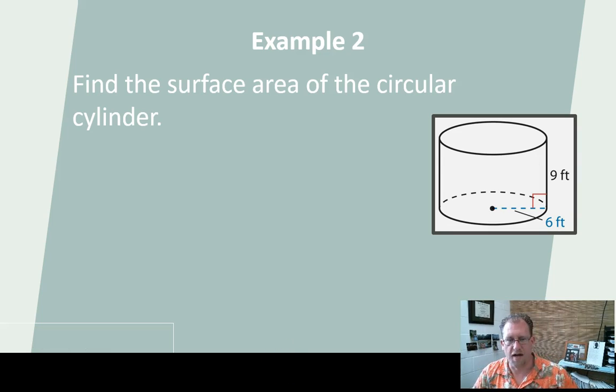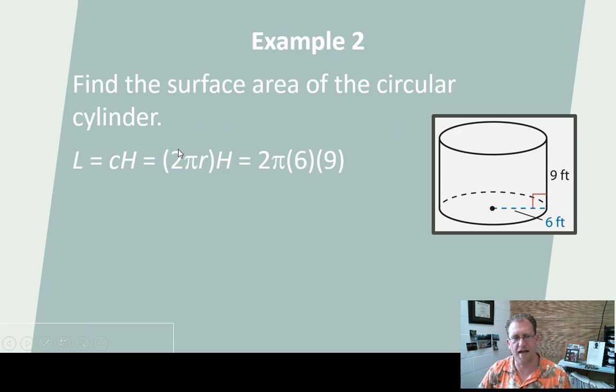So here's an example. I've got a cylinder, and the radius is 6 feet, and the height is 9 feet. That's all I need to know. I can solve this. First, let's lay out where we're going to go. So the lateral area is the circumference times the height. That's 2πr times the height. That's 2 times π times 6, because that's the radius, times the height, which is 9.